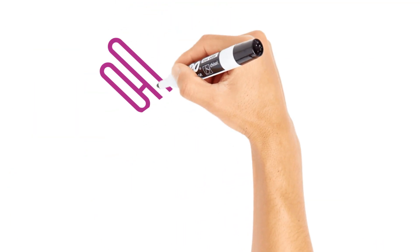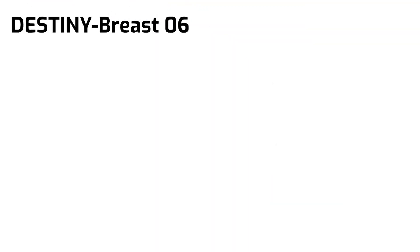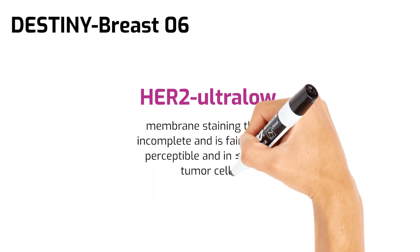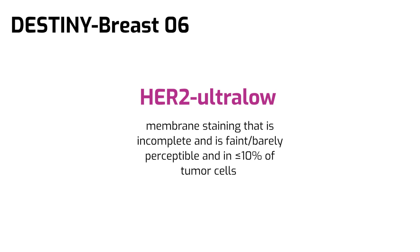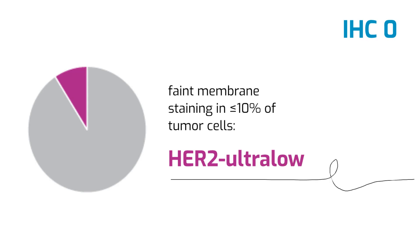In 2025, the FDA approved TDXD for the treatment of adult patients with unresectable or metastatic HER2 ultra-low breast cancer. In the DESTINY Breast 06 trial, HER2 ultra-low was defined as membrane staining that is incomplete and is faint, barely perceptible, and in less than or equal to 10% of tumor cells. Some tumors show faint membrane staining in less than or equal to 10% of tumor cells, and these are scored as IHC 0. This is now considered HER2 ultra-low, and TDXD is approved by the FDA for patients with HER2 ultra-low advanced breast cancer.